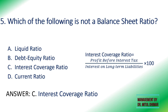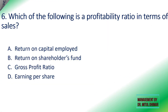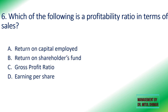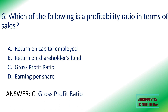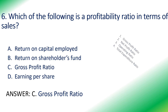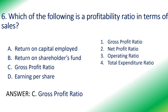Sixth: which is a profitability ratio in terms of sales — return on capital employed, return on shareholders' fund, gross profit ratio, or earning per share? The answer is gross profit ratio. Profitability in terms of sales uses the basic formula: profit divided by sales into 100, and only gross profit ratio follows this formula among the options.